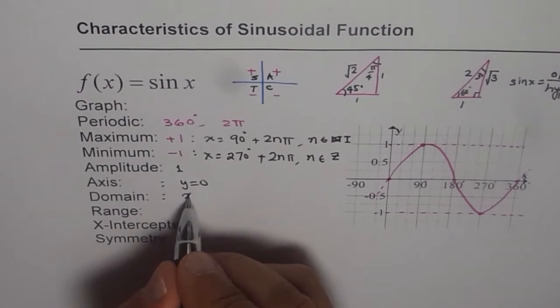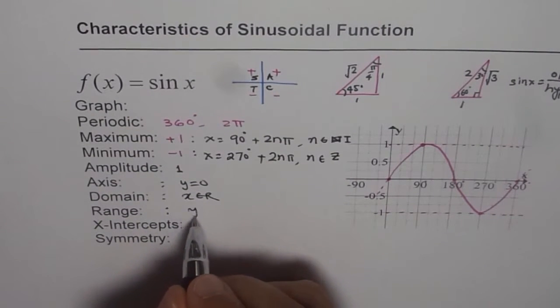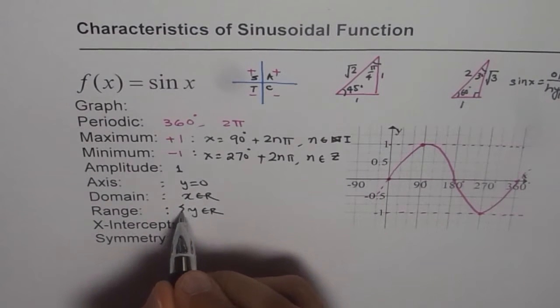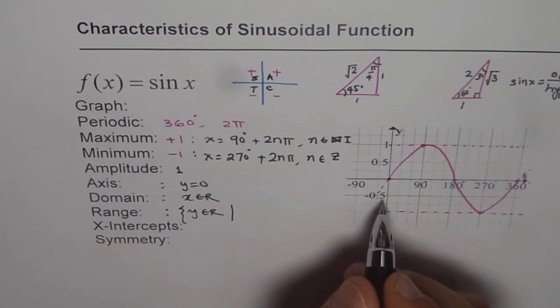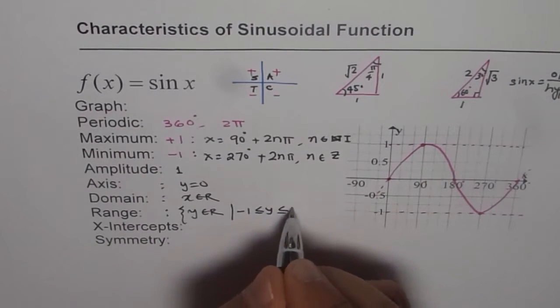Domain is all real numbers. So x belongs to real numbers. Range is y belongs to real numbers where y values from minus 1 to plus 1. So it's from minus 1 to plus 1.